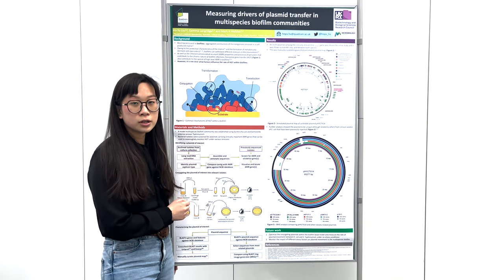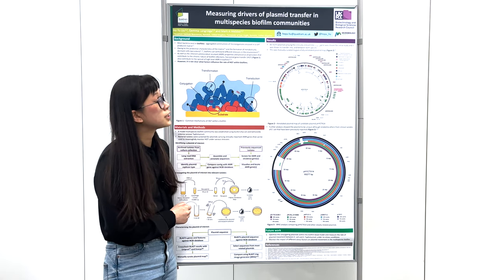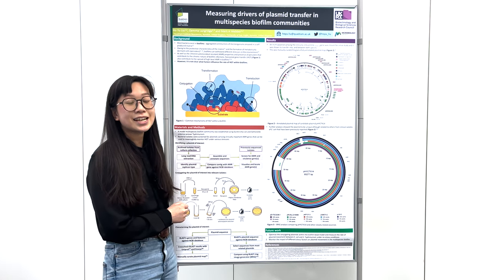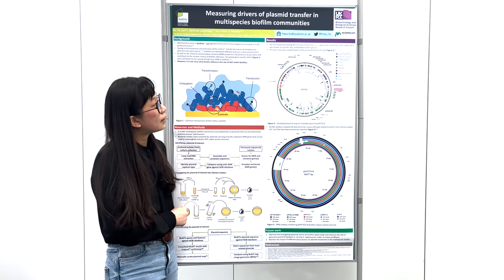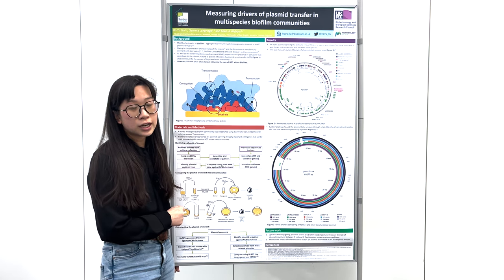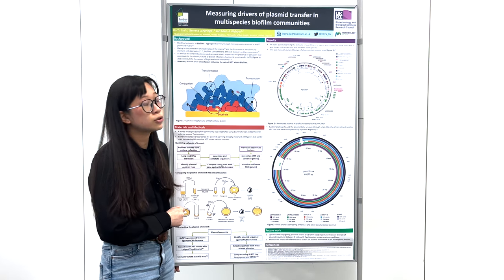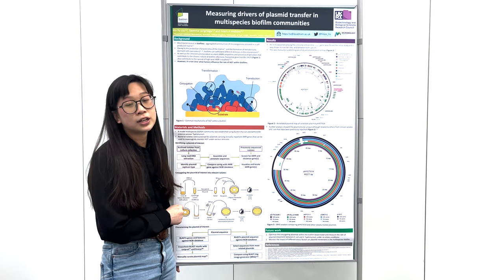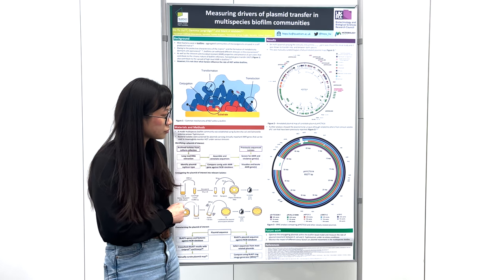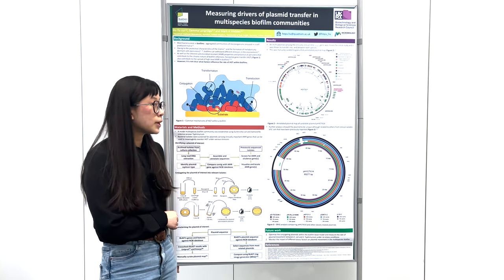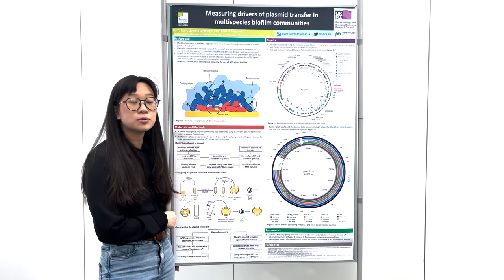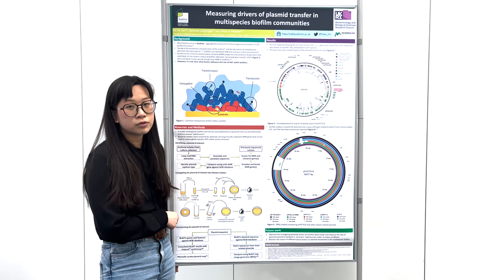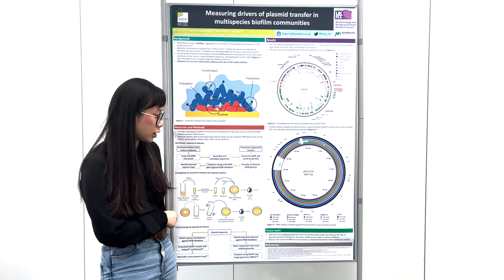The chosen plasmid candidate was found to be a type INC-F2 plasmid carrying the clinically relevant bla CTX-M-14 gene. This was chosen for initial study as it was shown to transfer into and between both E. coli and S. Typhimurium, and was manually curated with a fully annotated plasmid map. Further analysis also showed it to be unique, although related to others previously reported from clinical isolates of E. coli.